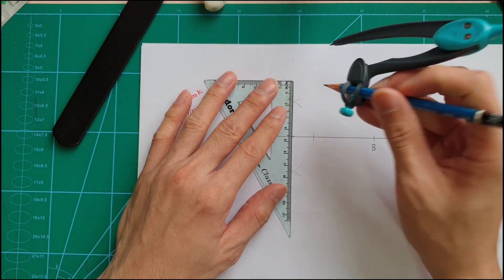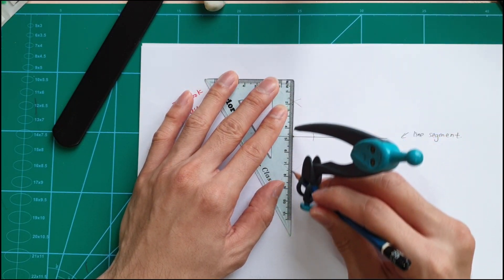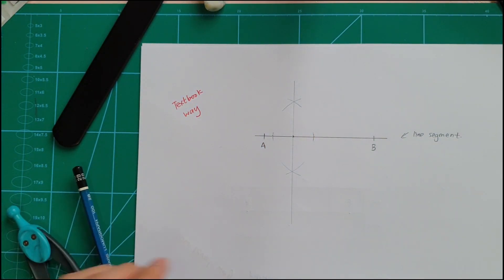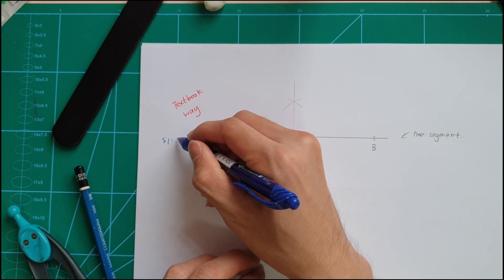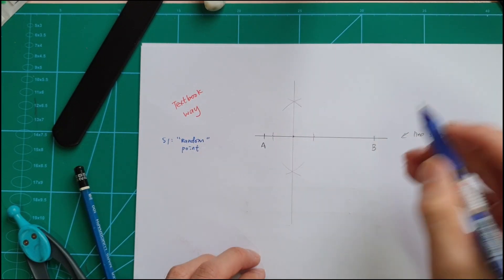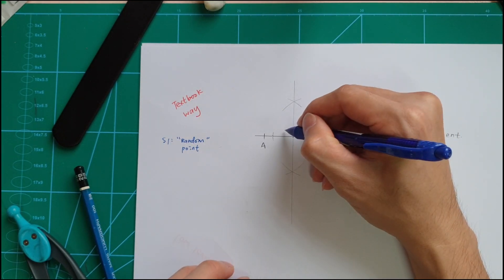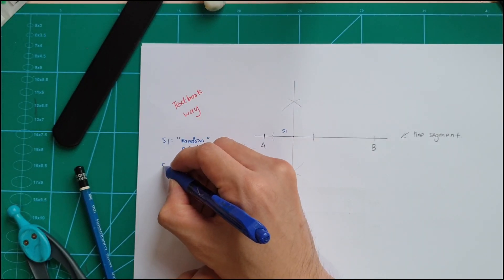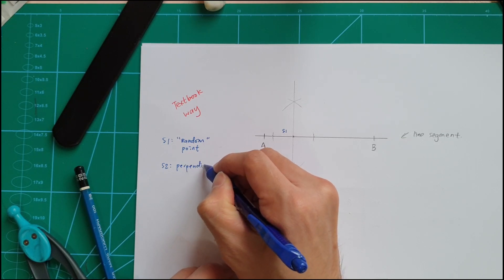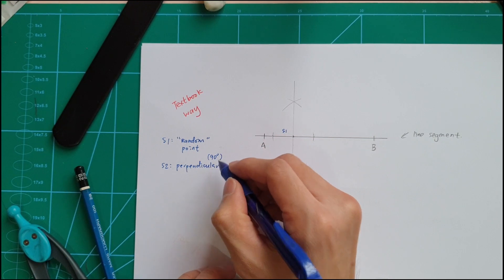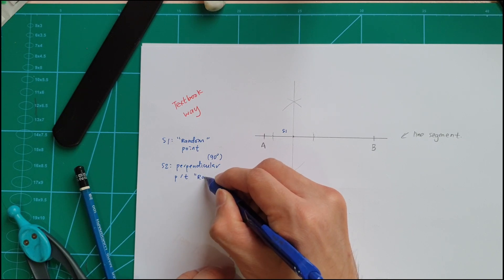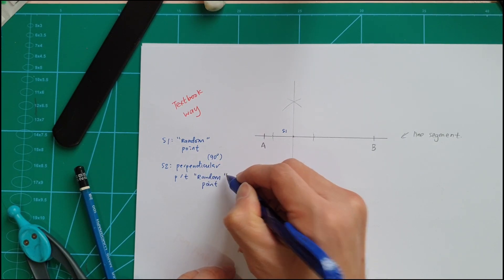So now I will connect them together — this is my 90-degree line. I'm going to write the steps. Step one: put one random point on the line segment. Step two: perform a perpendicular that passes through that random point. You see my random point here? The perpendicular passes through it.